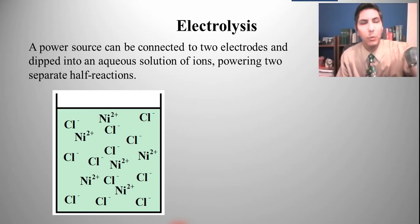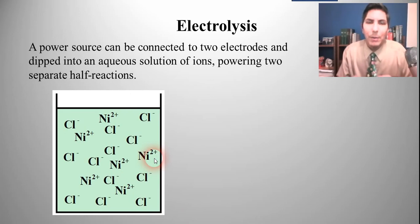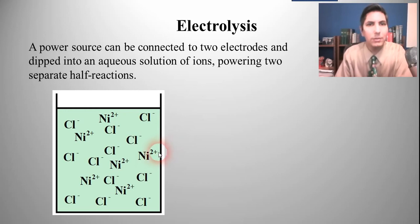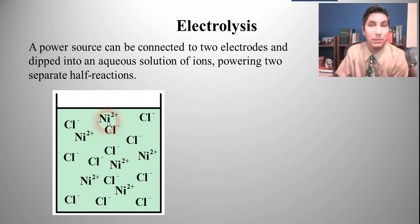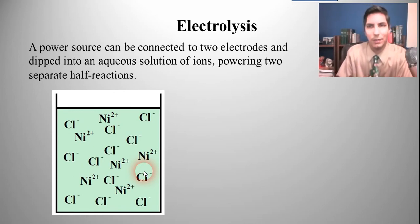In our last video, we were looking at some applications of electrochemistry. If we take a power source and hook it up to two electrodes and dip those two electrodes into an aqueous solution of ions, we can power two separate half-reactions. Here I have some nickel-2 chloride — nickel-2 ions in solution, some chloride ions in solution. But there's also another substance present: the water. We have three things that could potentially be reacting.